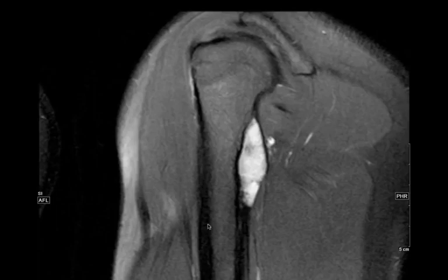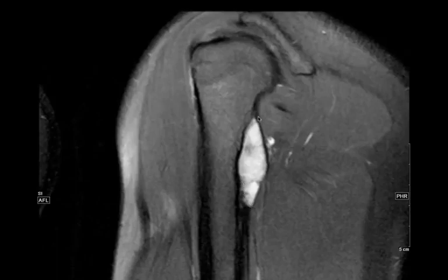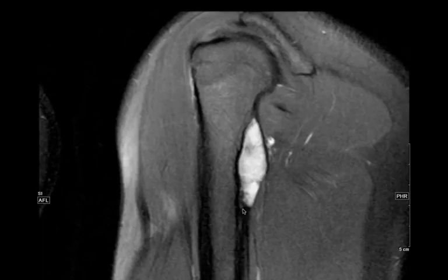This coronal MR shows a nice example of a juxtacortical lesion, very bright on T2-weighted sequences. This one was a juxtacortical chondroma — a really nice example of how it's arising right next to the cortex of the bone, kind of in the periosteum, and then growing under the cortex. You could say it's a cortically-based lesion, and that's fair, but in this case it was a juxtacortical chondroma.